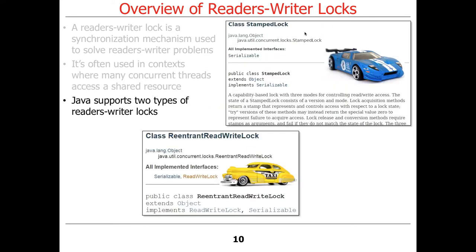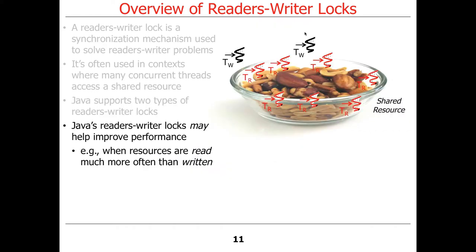Java supports two types of reader-writer locks. One is called ReentrantReadWriteLock, which is the older legacy way of doing things and turns out to be really slow. And then there's also something called a StampedLock, which is the newer Java 8, super-fast way of doing things. We're going to be focusing on StampedLock.